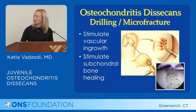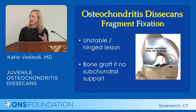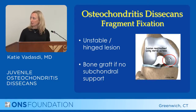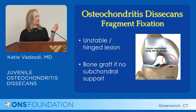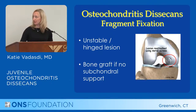If the lesion is unstable or hinged, you can arthroscopically place screws right through it and hold it in position — as you can see, this one has been repaired with two screws. If there's injury to the subchondral bone and a lack of bone on the undersurface of that cartilage, sometimes you need to put bone graft in that area.